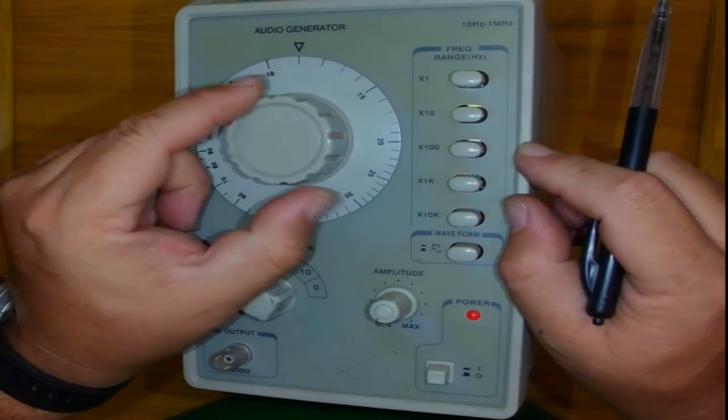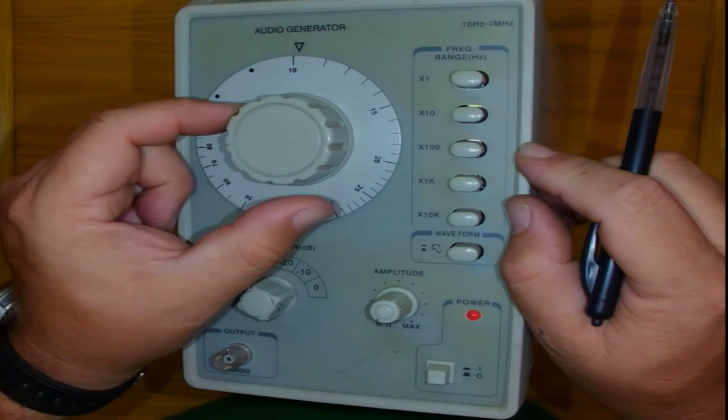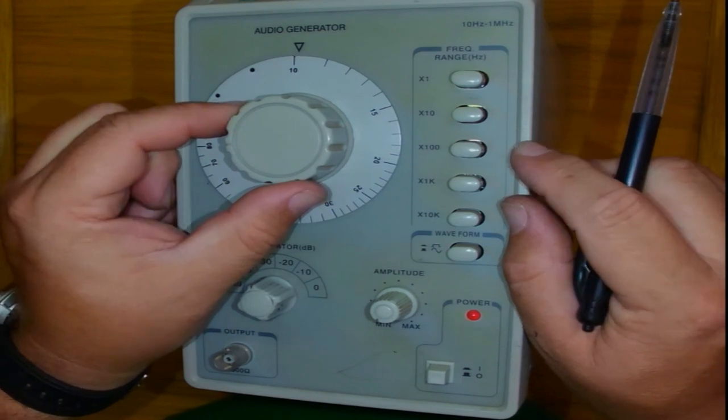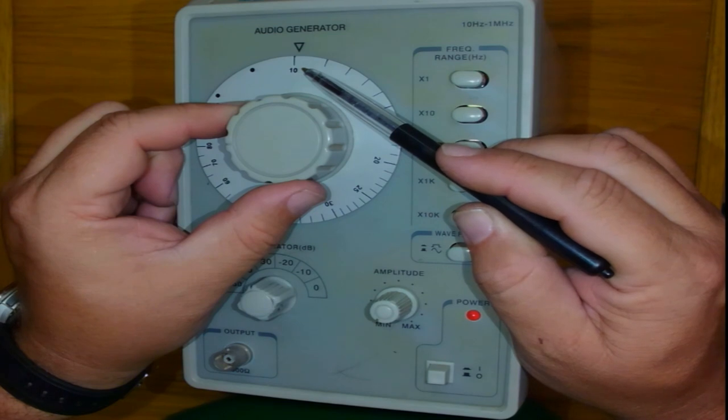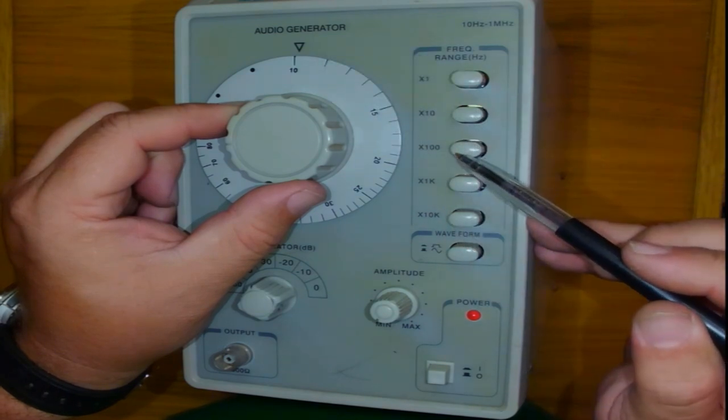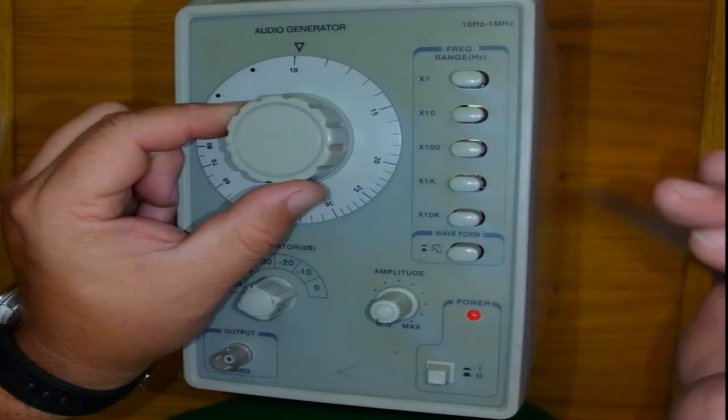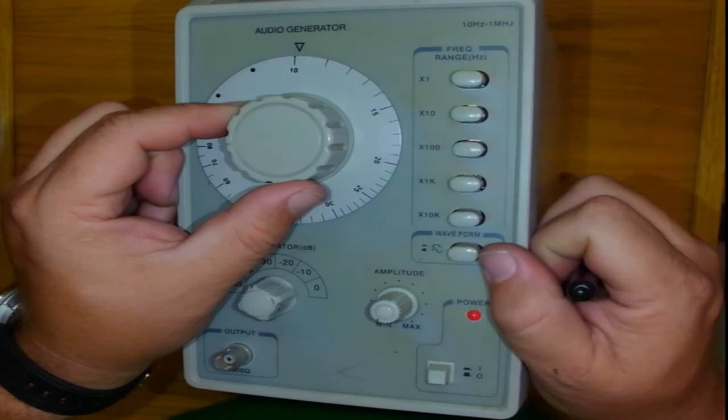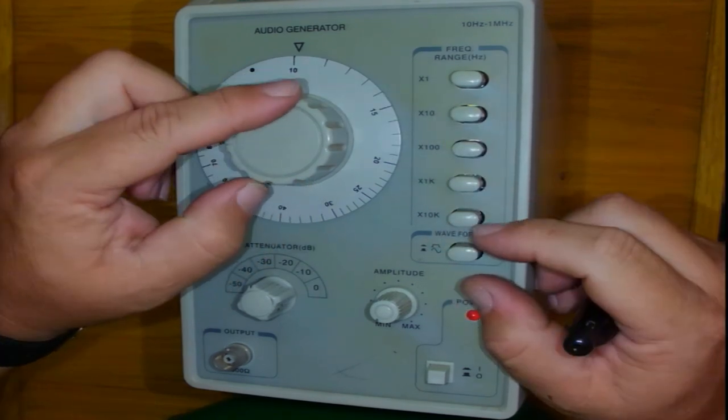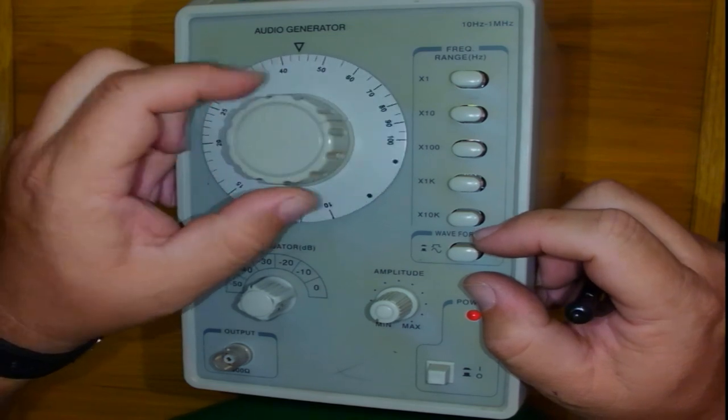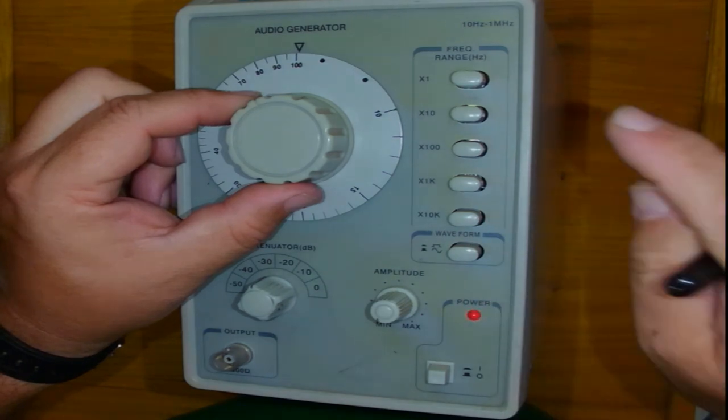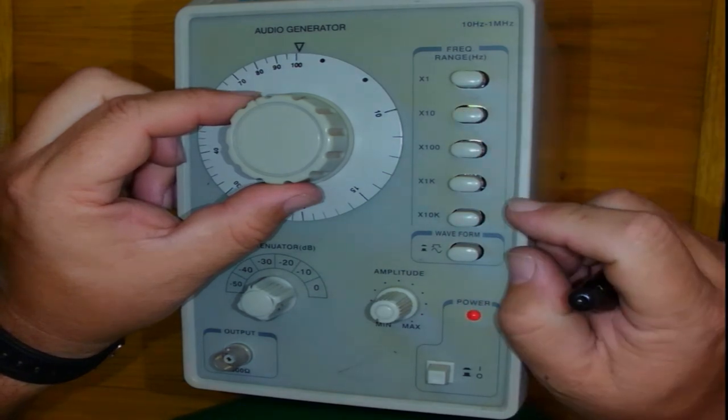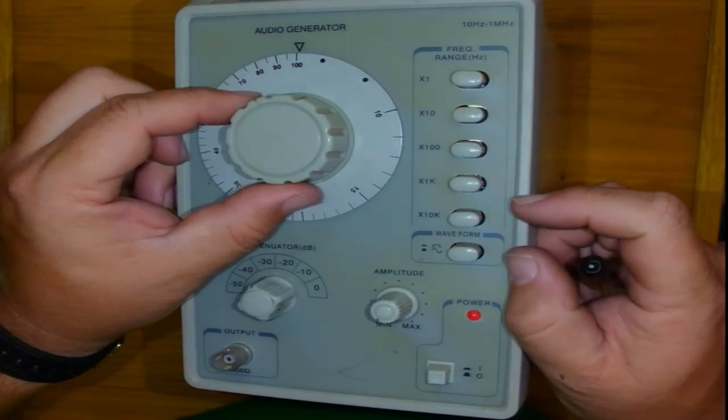You are going to do a lot of experiments on 1 kilohertz. 1 kilohertz can be set up by 10 times 100. 10 times 100 is 1000. Alternatively one can put the big dial onto 100. 100 times 10 also gives me 1 kilohertz.